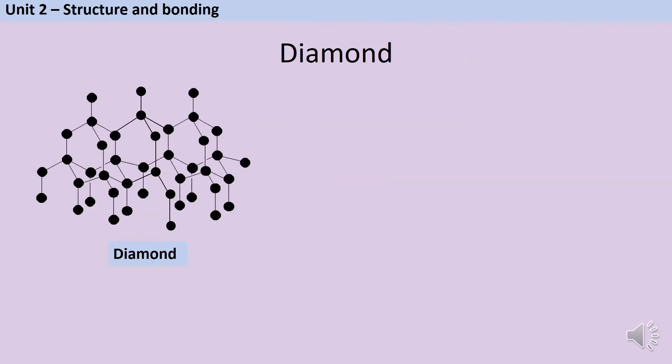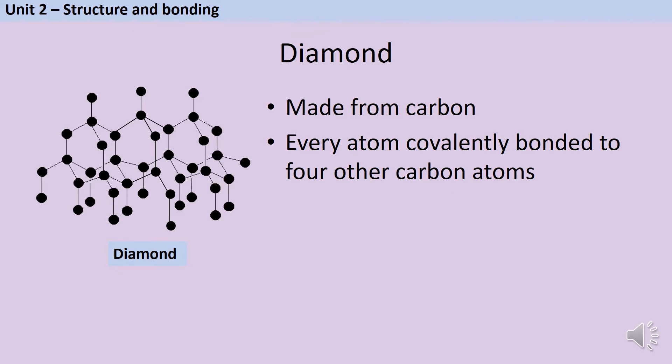One example of a giant covalent structure or a macromolecule is diamond. Diamond is made out of carbon atoms and each one of those carbon atoms is capable of forming four strong covalent bonds. Because these bonds require a huge amount of energy to overcome, this means that diamond has a very, very high melting point.